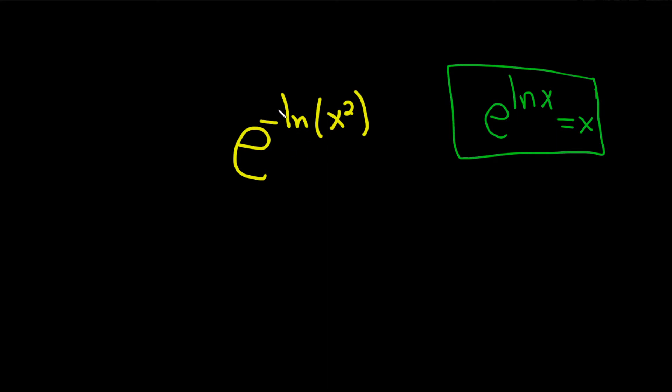So here we have a negative 1. We'll start by bringing this upstairs using what's called the power rule for logs. If you have a number here, you can just bring it up. This is e to the natural log of x squared to the negative 1.